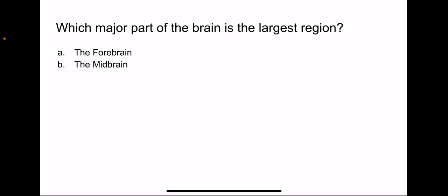Which major part of the brain is the largest region? A. The forebrain, or B. The midbrain? The correct answer would be A. The forebrain.